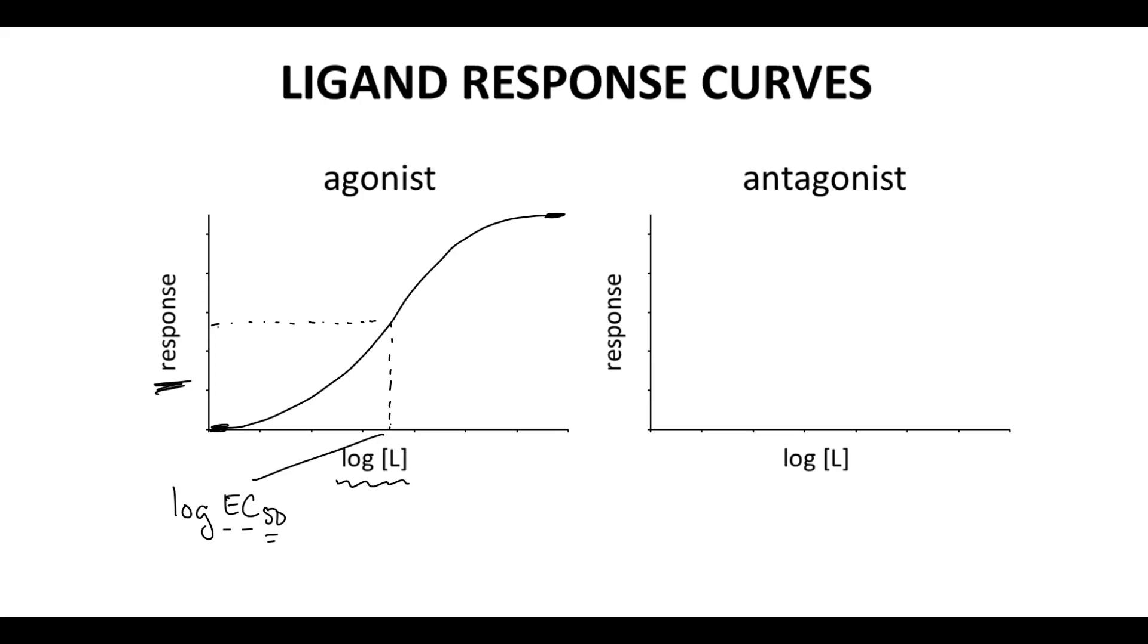The partial agonists look very similar to full agonists, except the curve does not rise all the way to 100%. It'll be some number lower. It might be much lower or just a little bit lower. These curves for partial agonists also have an inflection point, and that inflection point is still called a log EC50. So even though the y-axis value is not 50%, it's still considered 50% of what the partial agonist can do. We still call this a log EC50.